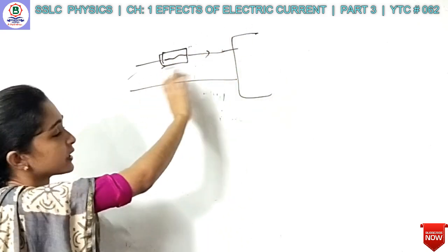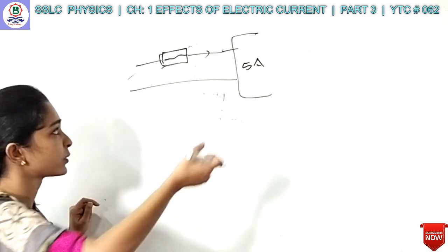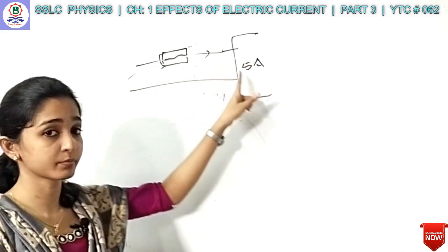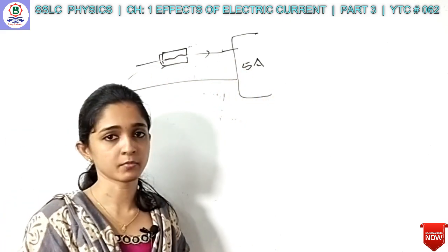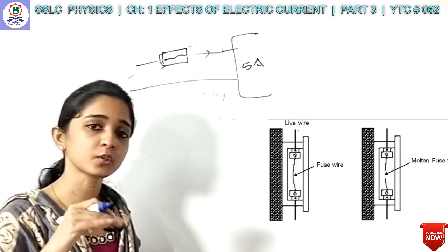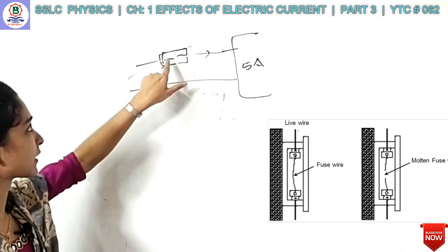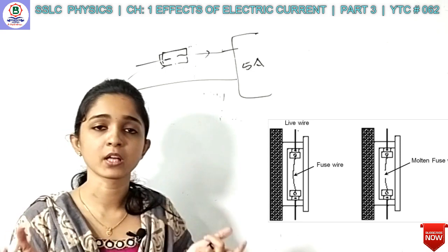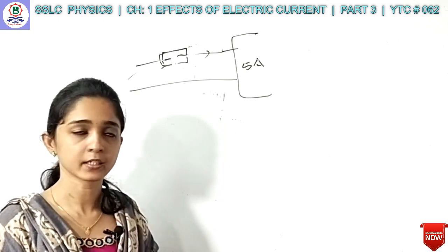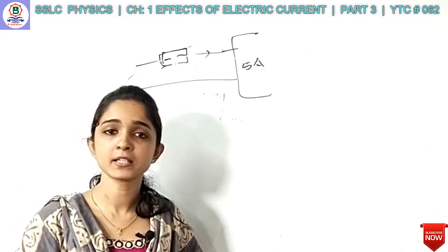This is the current. If you have a 5A current in the circuit but the fuse doesn't have the capacity for that, then if you have 5A current and the fuse wire doesn't have the same capacity, the 5A passes through the fuse wire. The fuse wire will then break. The current will no longer flow. In this way, we will save the appliances.